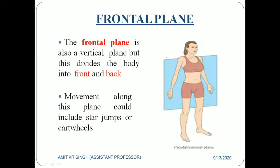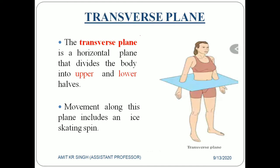Looking at the frontal plane example: the body has been divided into front and back. When the hand goes away from the body that is abduction, and when it comes closer that is adduction. You can see the hand is sliding on this frontal plane — this glass pane has divided the body and the hand slides easily on this surface. That is why abduction and adduction takes place in the frontal plane.